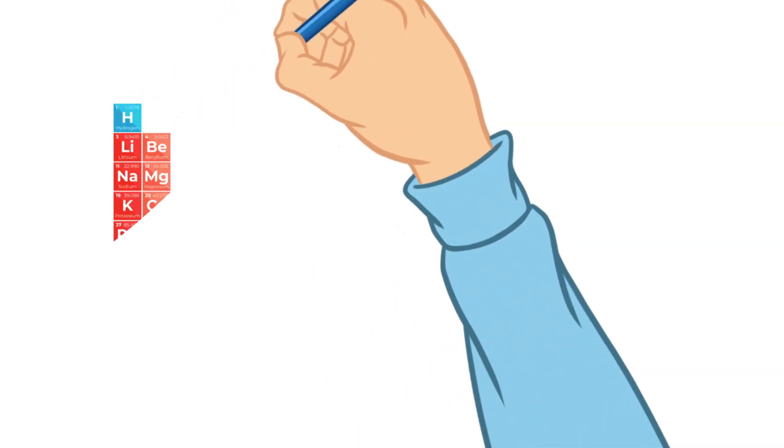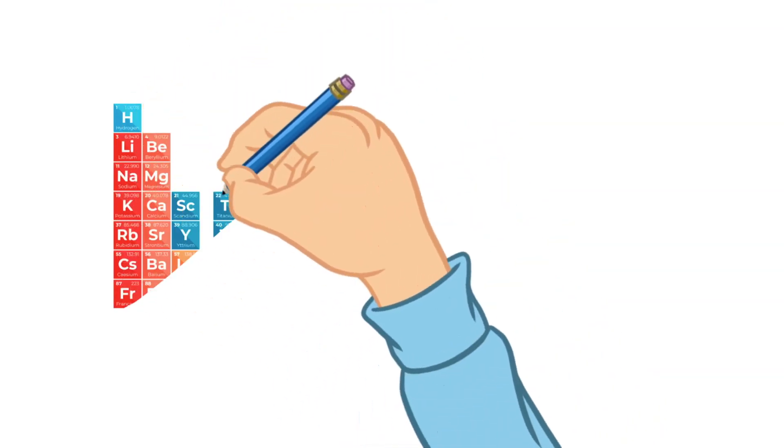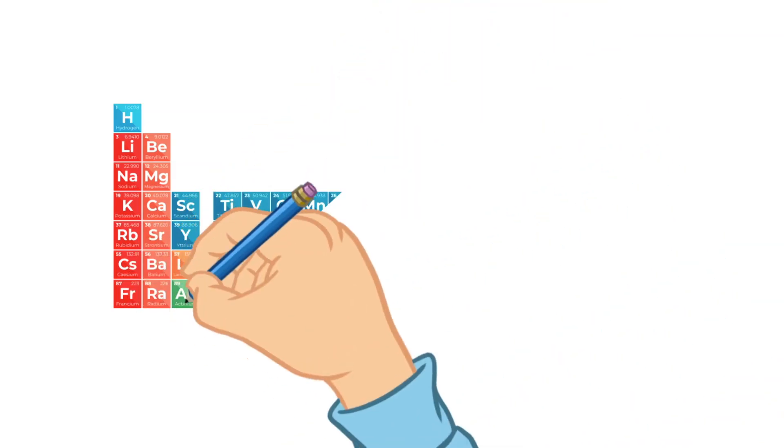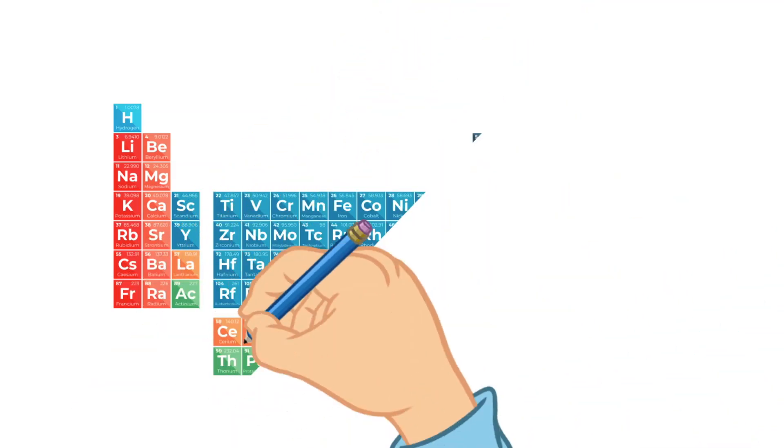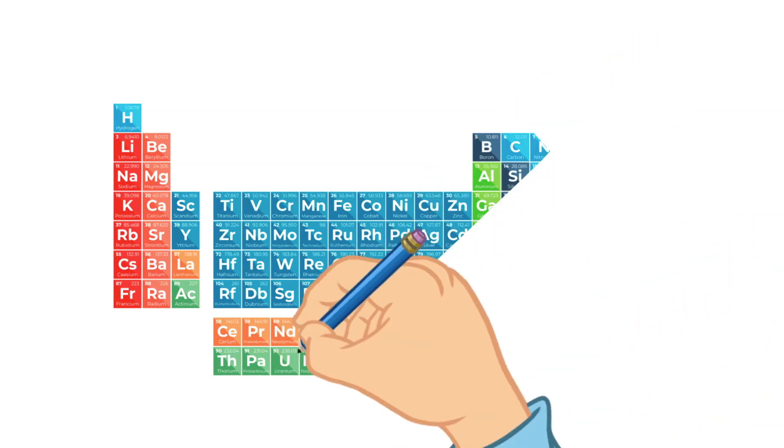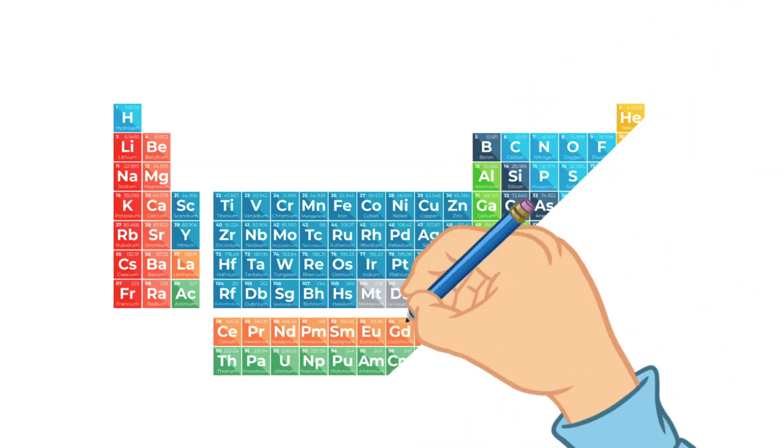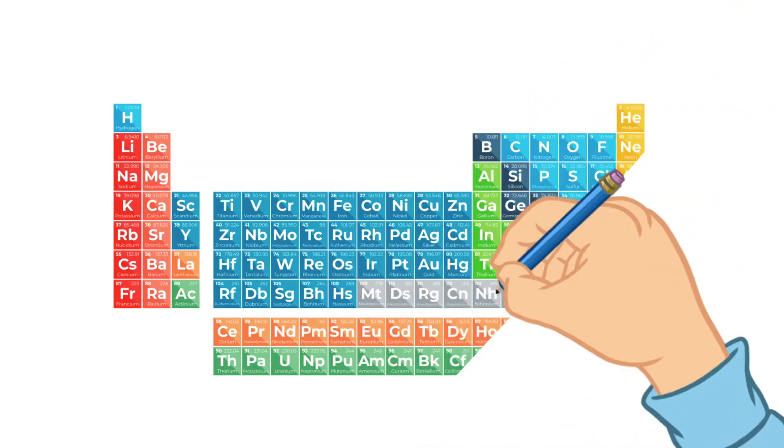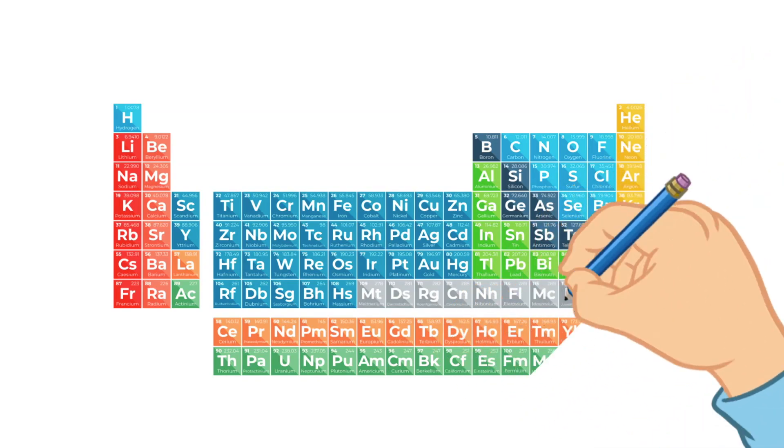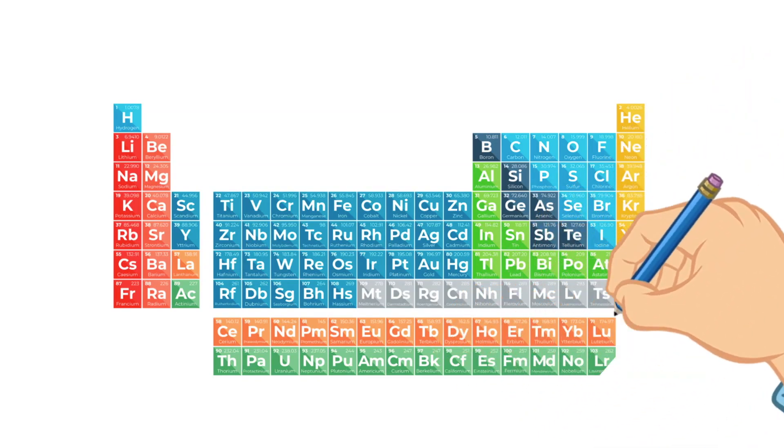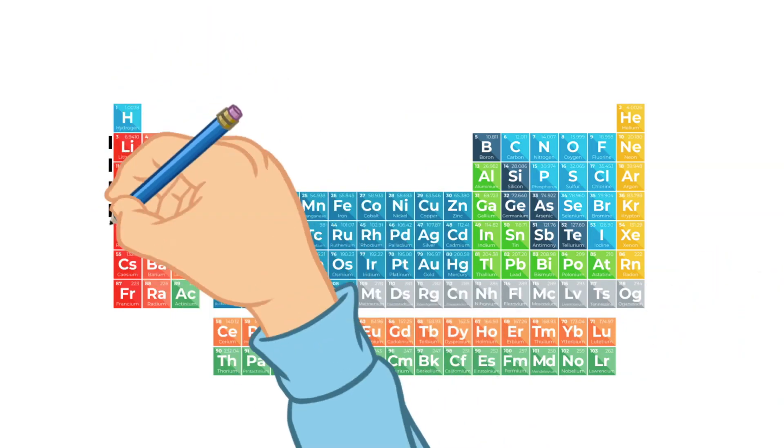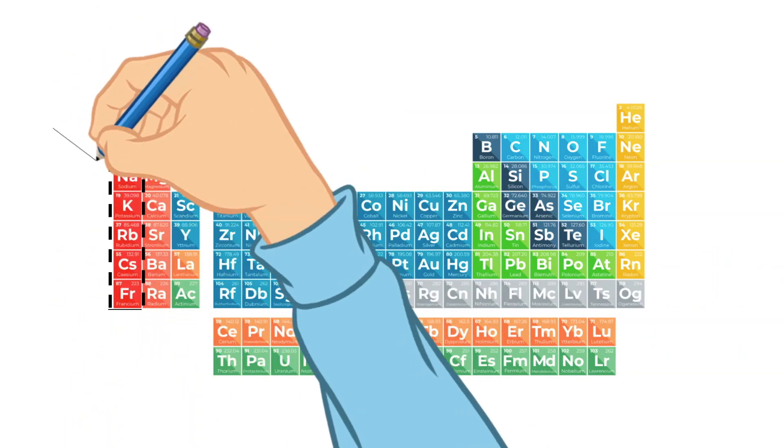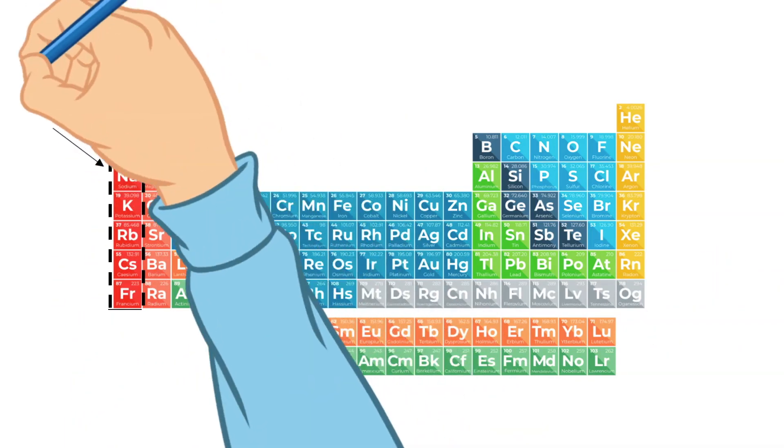We talked in the last video about how the atoms that comprise an element are organized onto a periodic table by the atomic number, which if you remember from last video, is the number of protons in an atom.